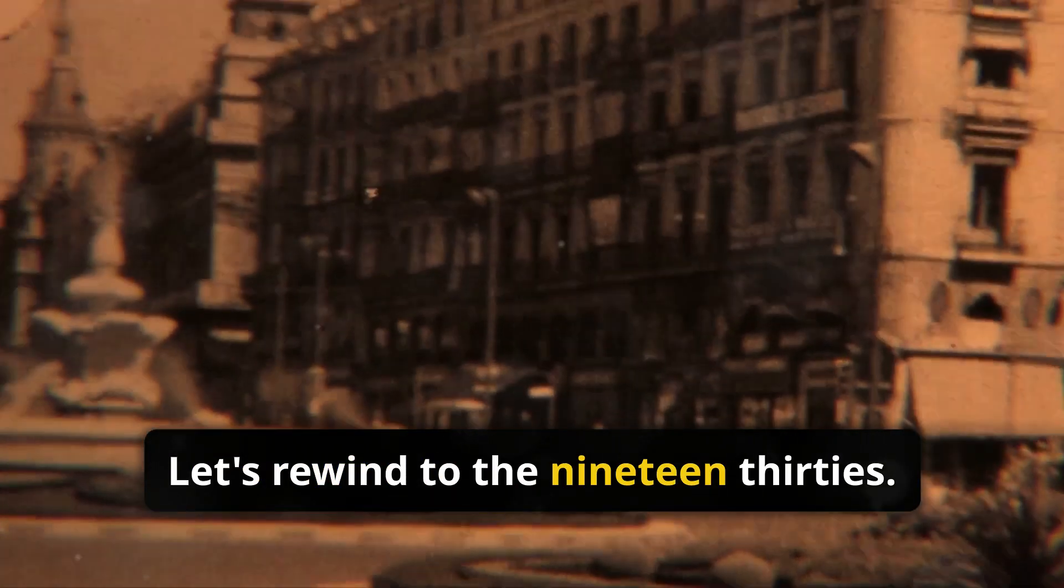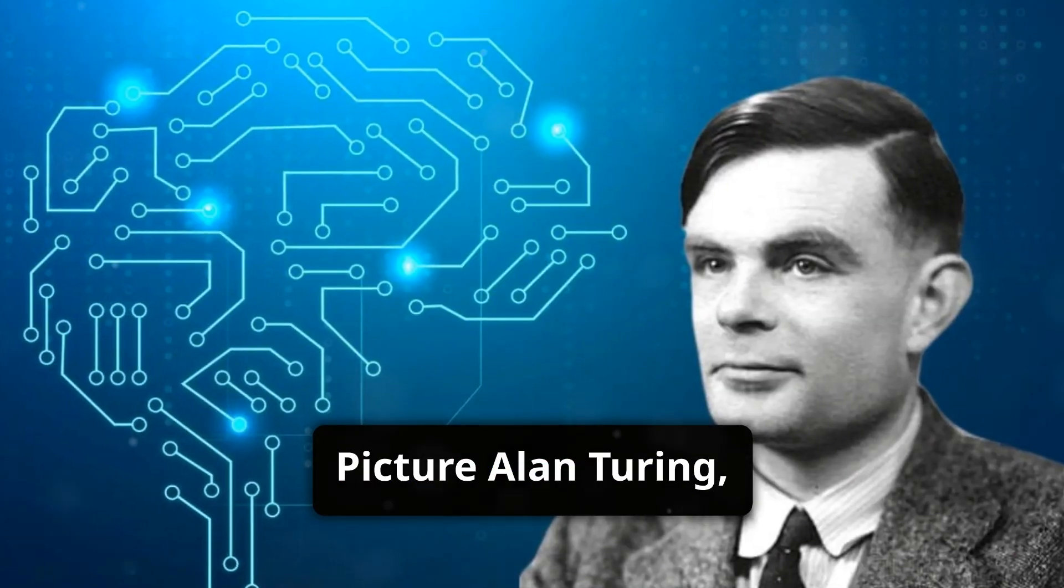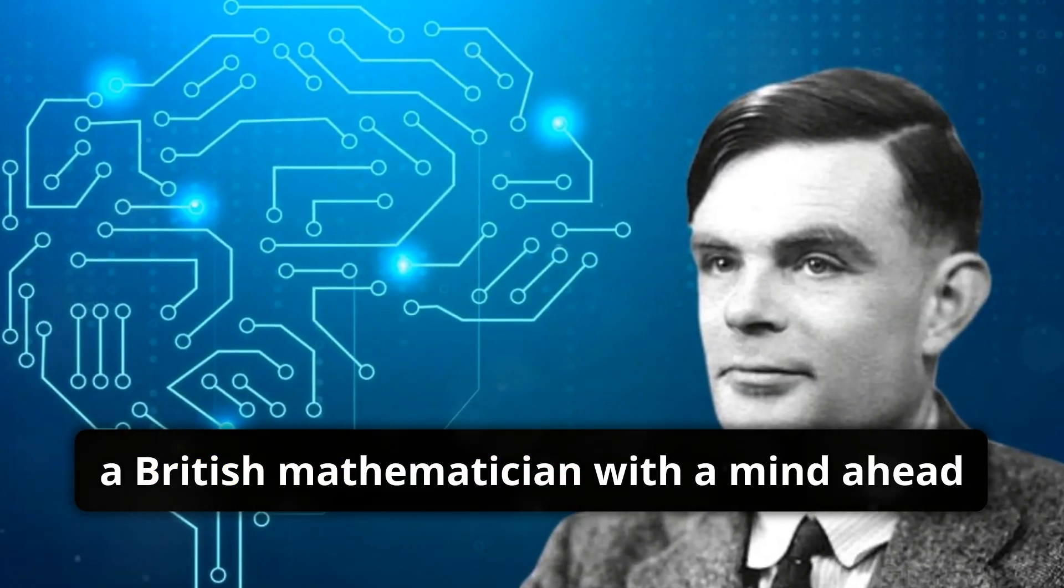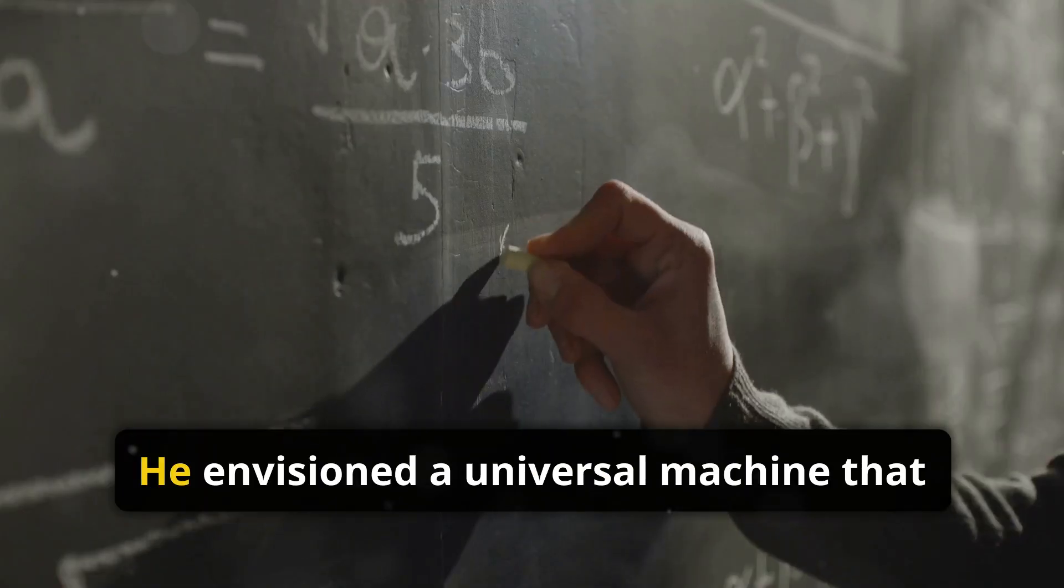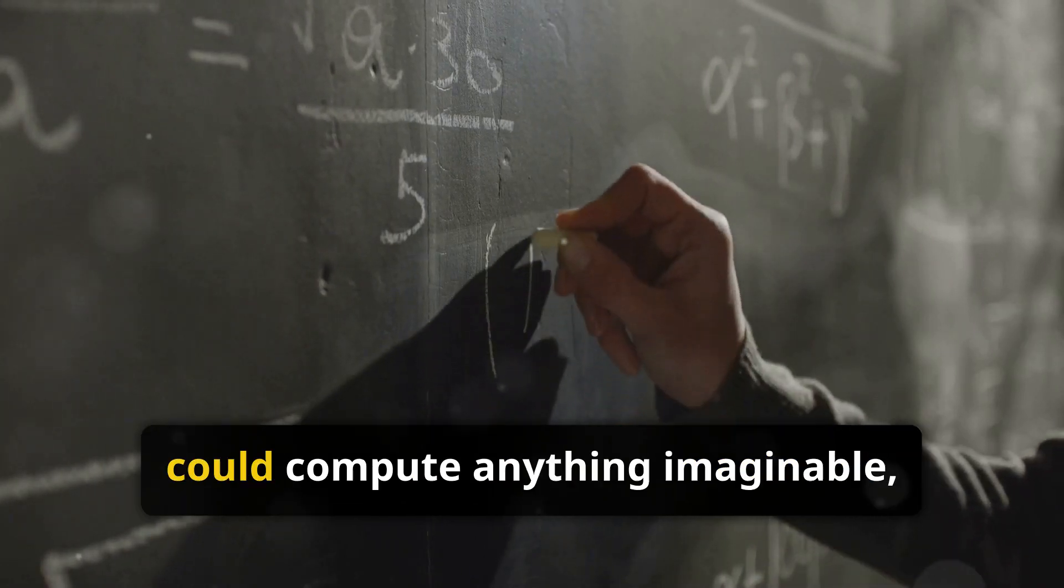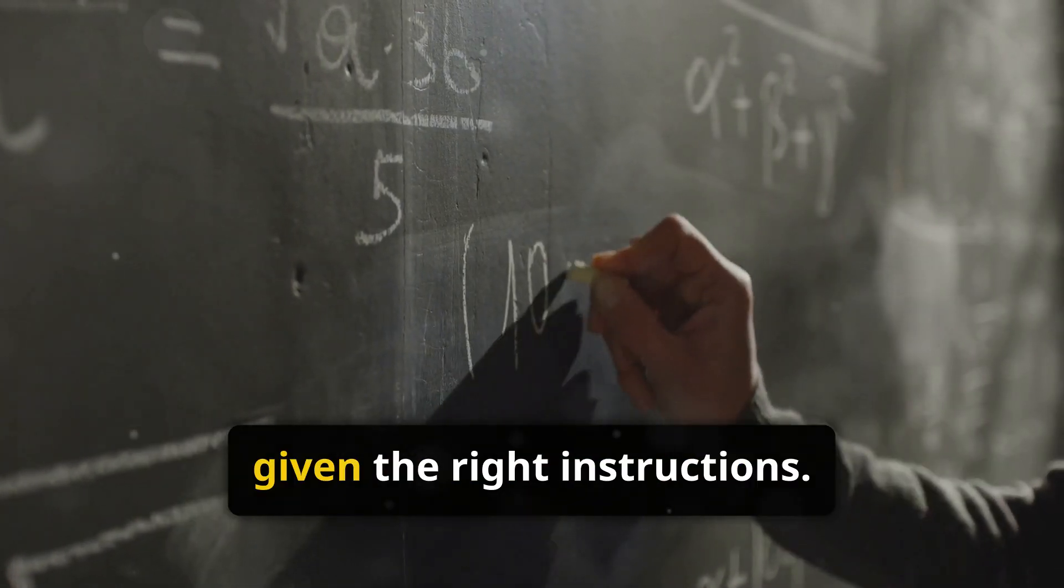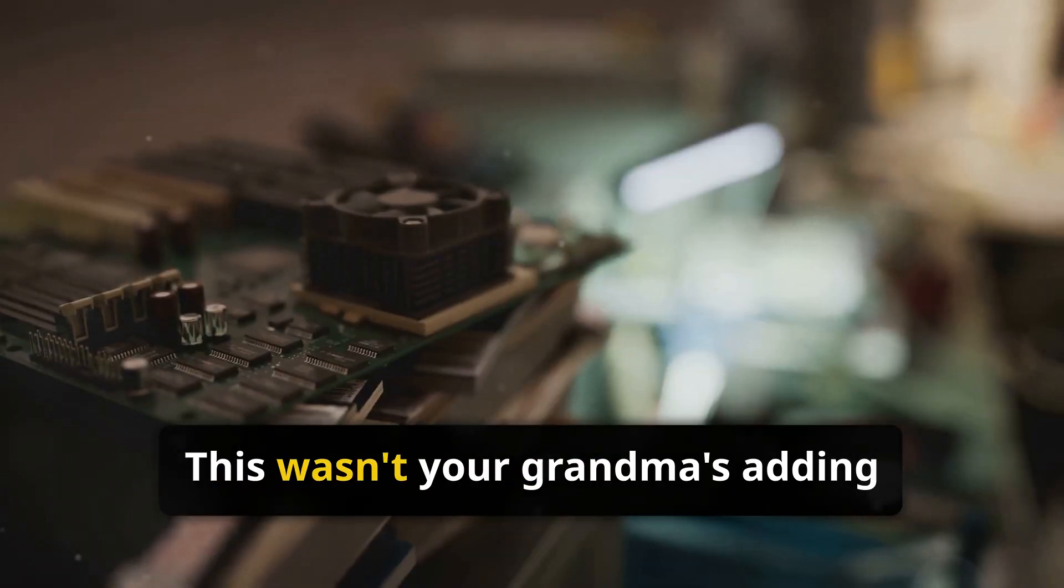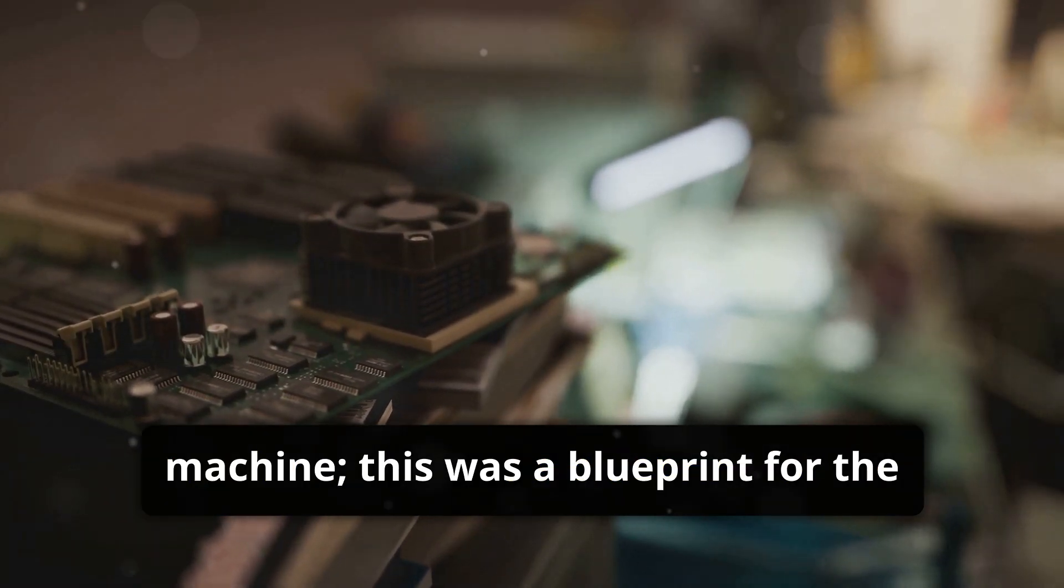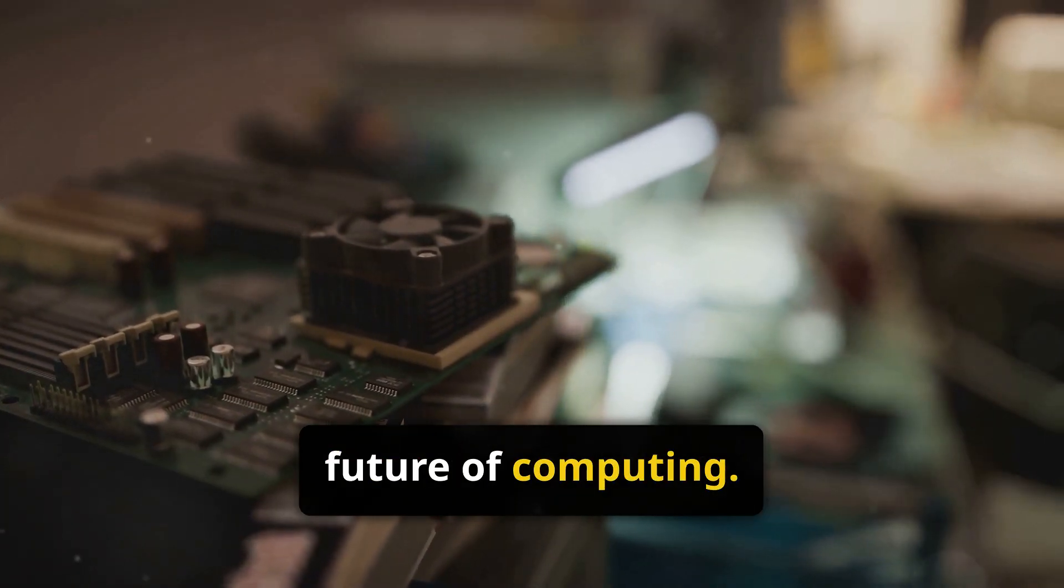Now let's rewind to the 1930s. Picture Alan Turing, a British mathematician with a mind ahead of his time. He envisioned a universal machine that could compute anything imaginable given the right instructions. This wasn't your grandma's adding machine, this was a blueprint for the future of computing.